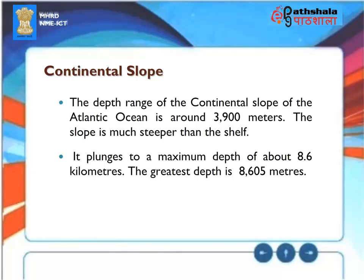Continental Slope: The depth range of the continental slope of the Atlantic Ocean is around 3,900 meters. The slope is much steeper than the shelf, plunging to a maximum depth of about 8.6 km, with the greatest depth recorded at 8,605 meters.